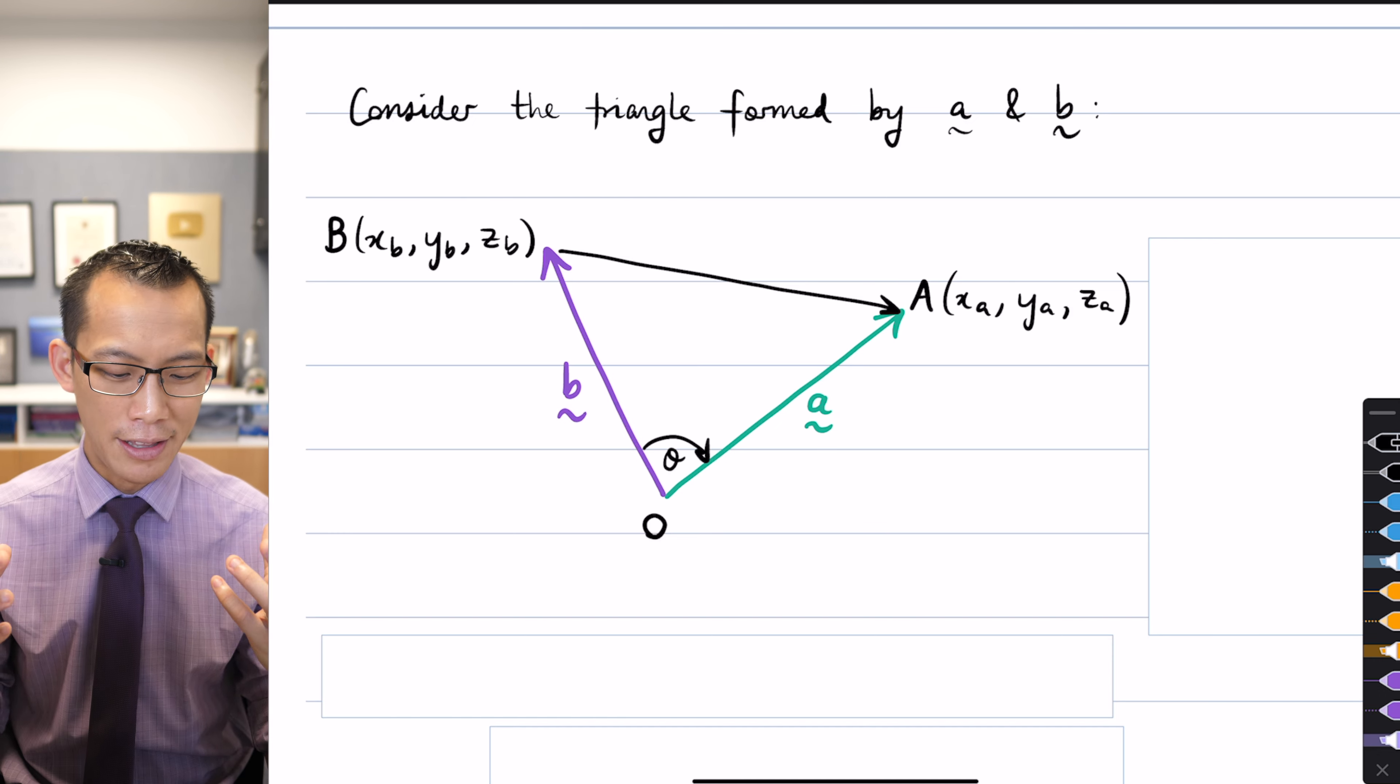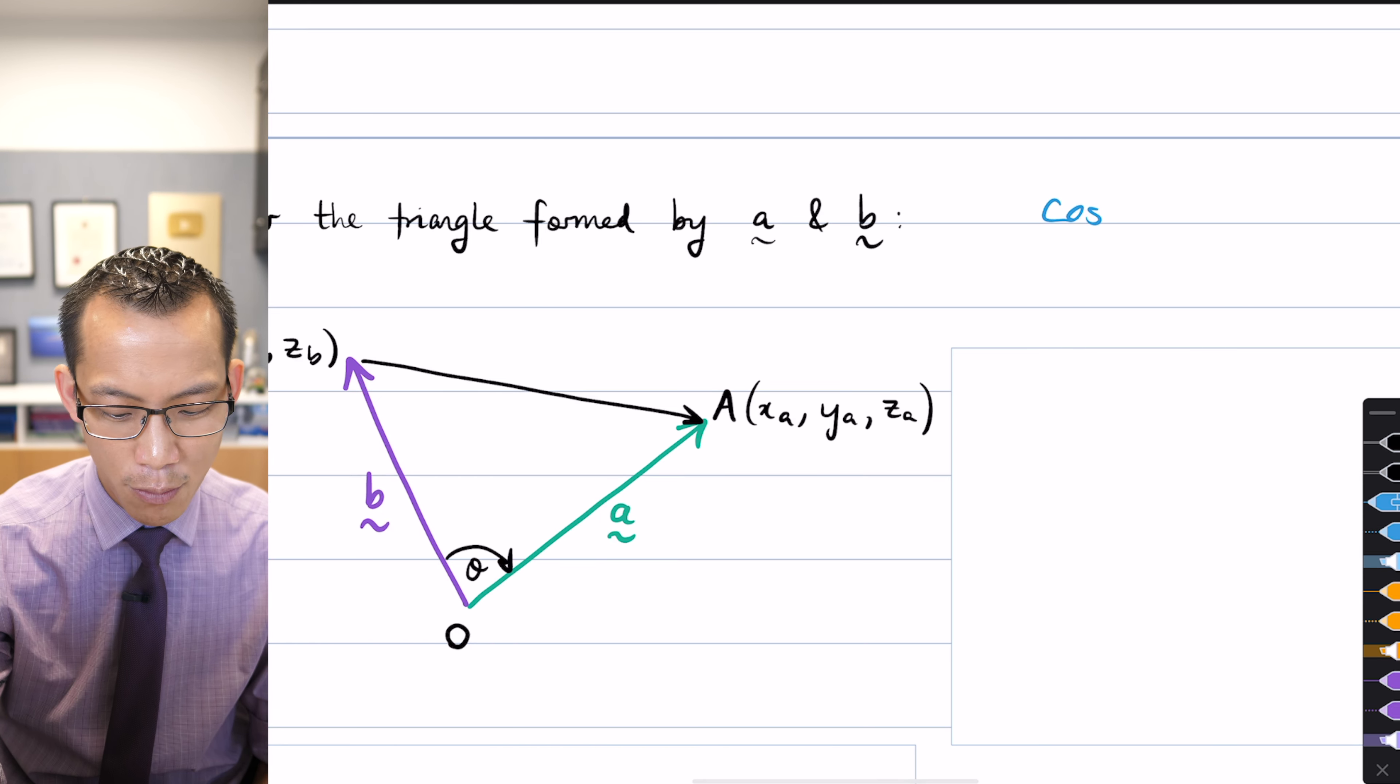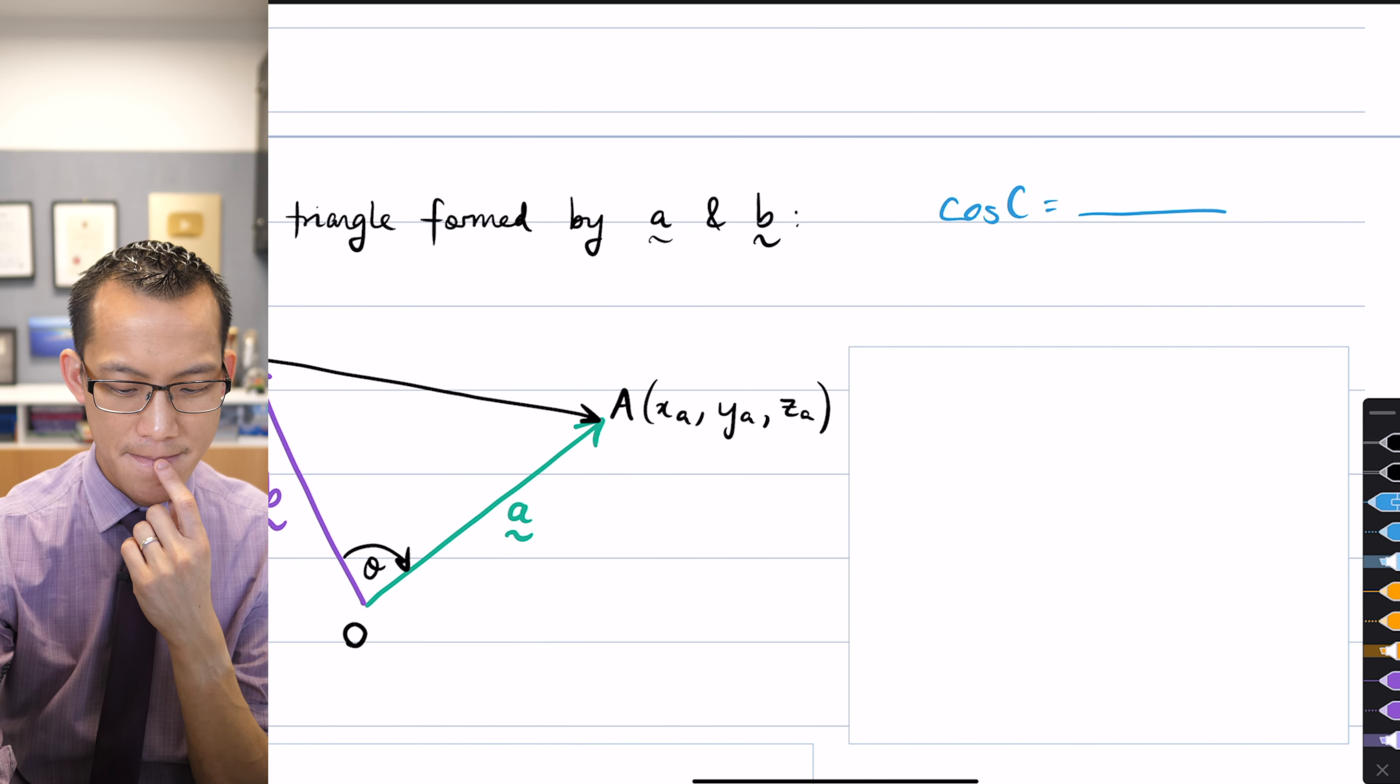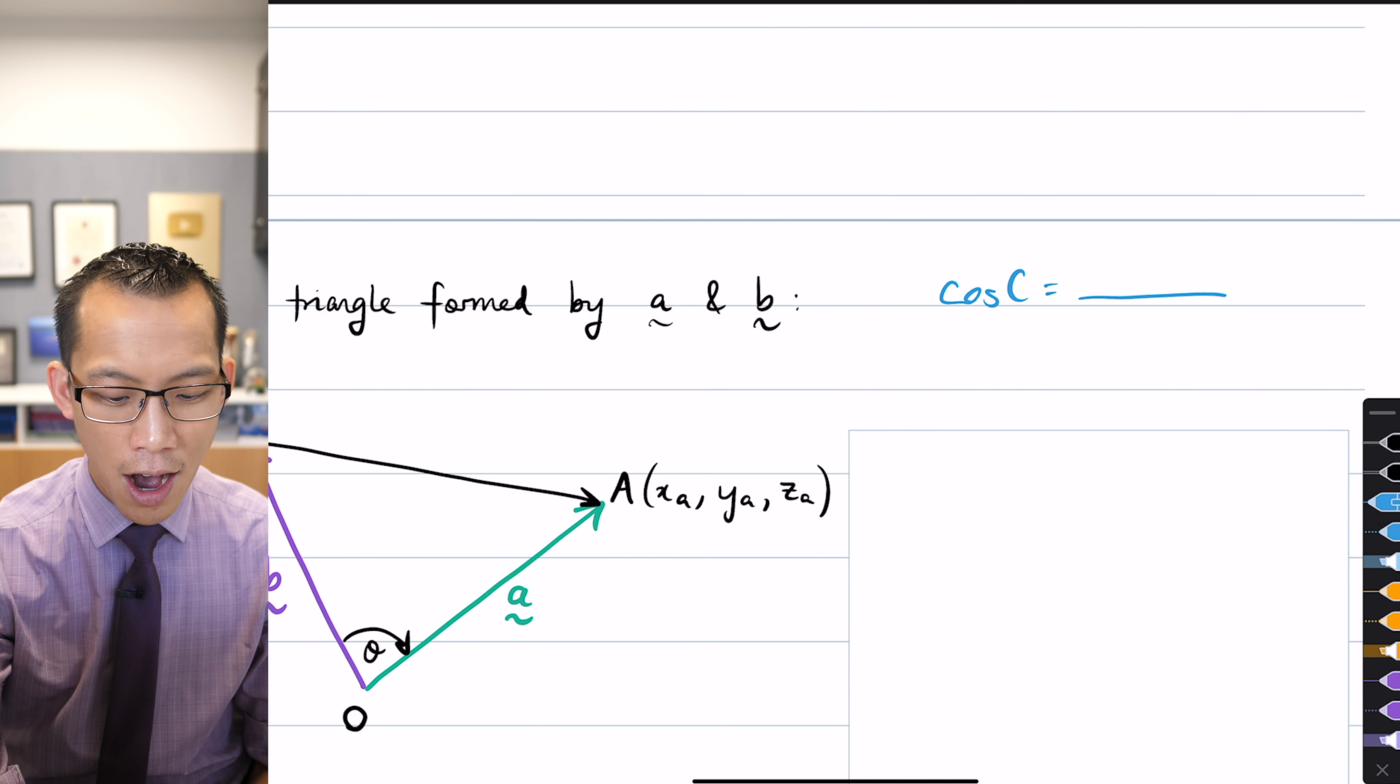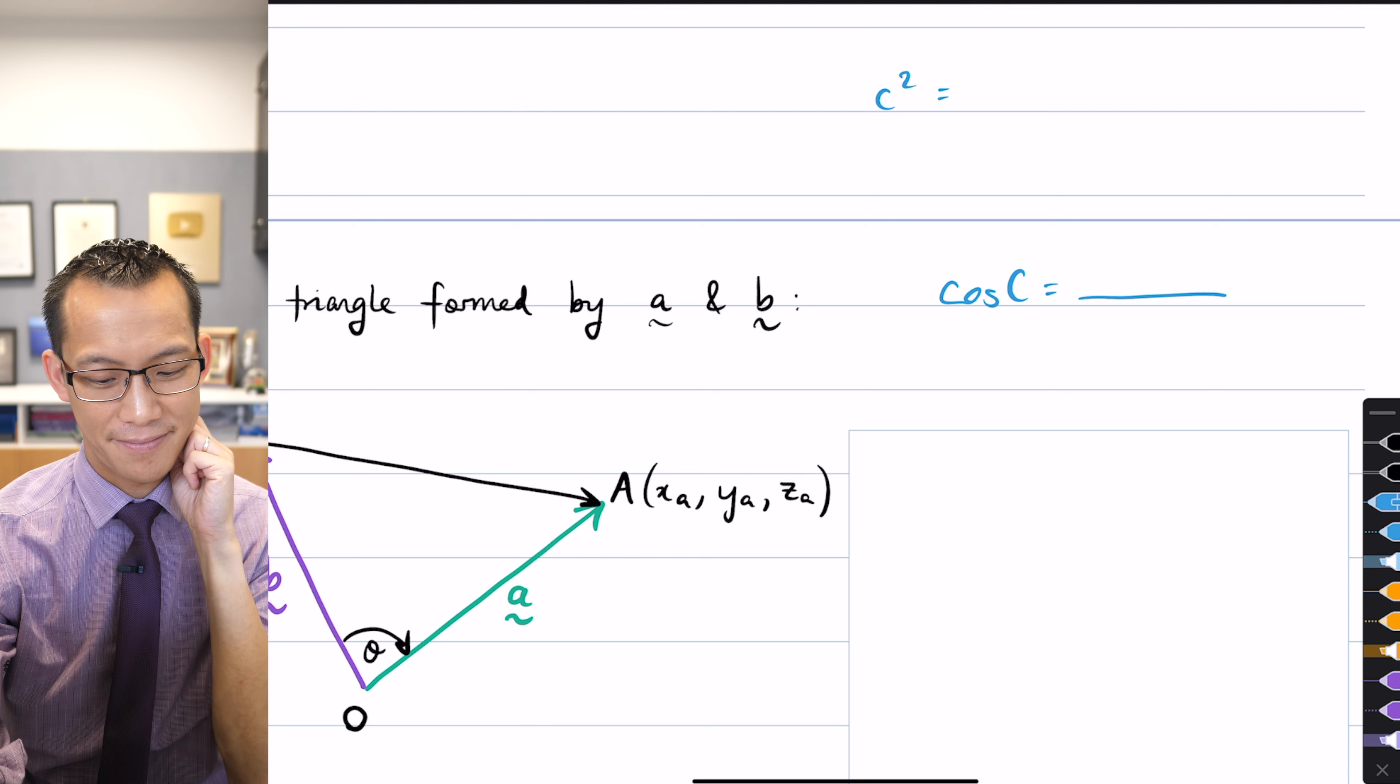The cosine rule allows me to find an expression for cos theta that doesn't have any thetas in it. If you guys remember it, actually help me recite it. Cos of, we normally say like cos of capital C. I wonder if you remember, it's a fraction. Do you remember this? What's on the top?